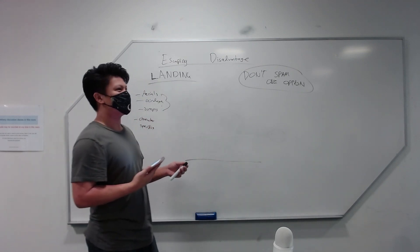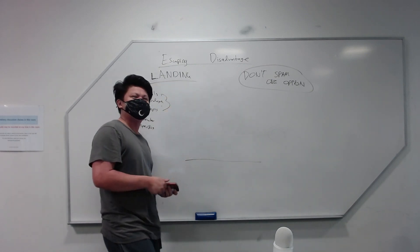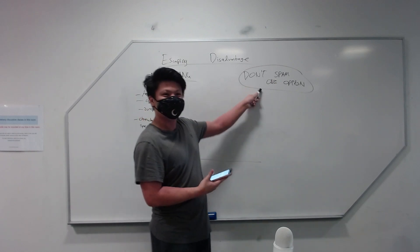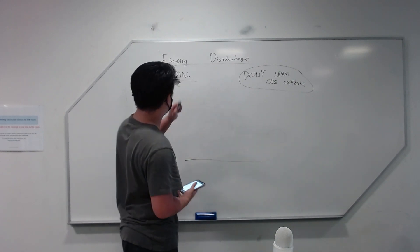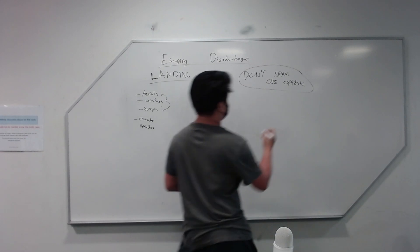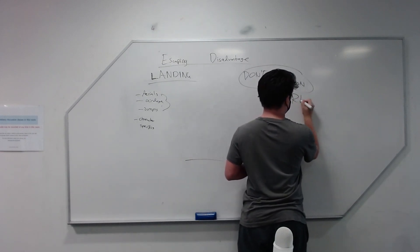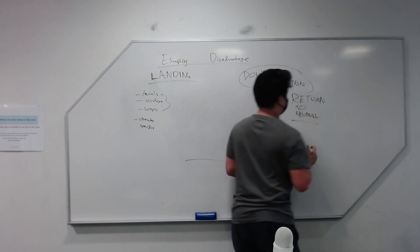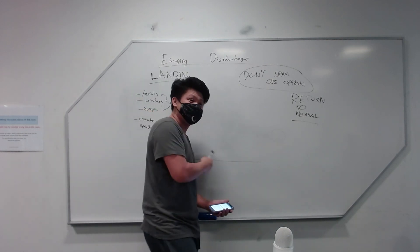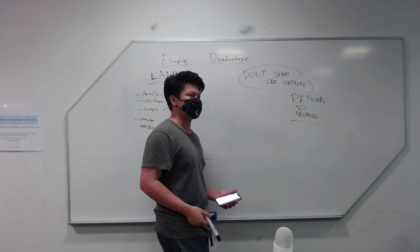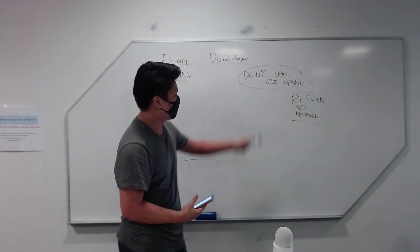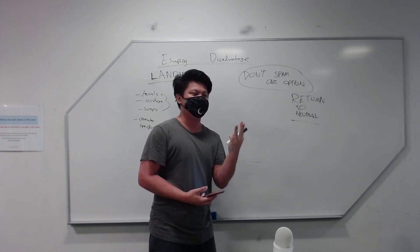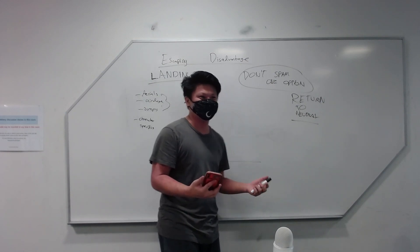People get so frustrated asking why they can't land — it's because they're brute forcing. It worked as a mix-up once, but then you just start using that same option over and over. It's no longer a mix-up, it's just brute forcing your way down. Remember your goal: don't spam one option, and return to neutral. The biggest misconception is that once they get out of disadvantage they need to start pressing buttons and getting their offense going — no, you reset to neutral. Or they find three mix-ups and only use those three without trying to expand their repertoire of disadvantage options.